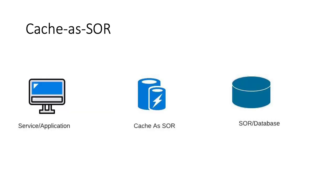Let's talk about what cache as a system of record really means. A system of record can formally be defined as any authoritative source for a particular data element. For example, if you are looking for a telephone number and you have two different sources of data providing that, the most reliable one is what you would call a system of record. In general, your database is the system of record, and here we are talking about relying on the cache as a system of record instead.